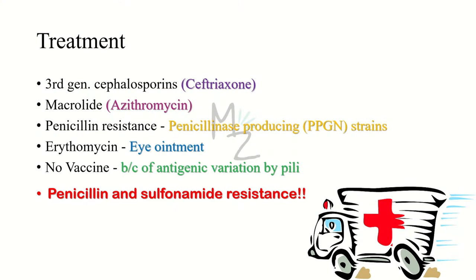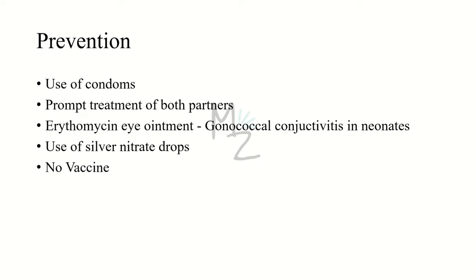Treatment: third-generation cephalosporins like ceftriaxone are used for treatment. Certain macrolides like erythromycin can also be used. Because this bacterium releases beta-lactamases (penicillinase), it has developed penicillin resistance, so penicillin cannot be used. Erythromycin is also used as an eye ointment. There is no vaccine against Neisseria gonorrhea due to antigenic variation by pili. Penicillin and sulfonamide resistance have been observed. Prevention involves the use of condoms, prompt treatment of symptomatic patients and their partners, and erythromycin eye ointment for gonococcal conjunctivitis in neonates. In some places, silver nitrate drops are also used.